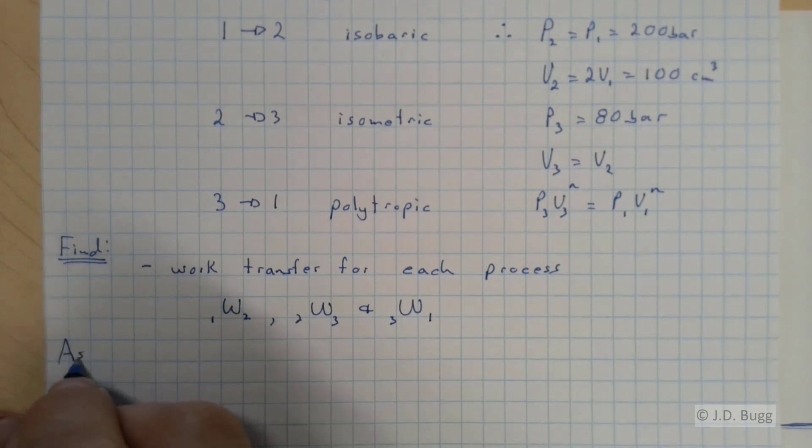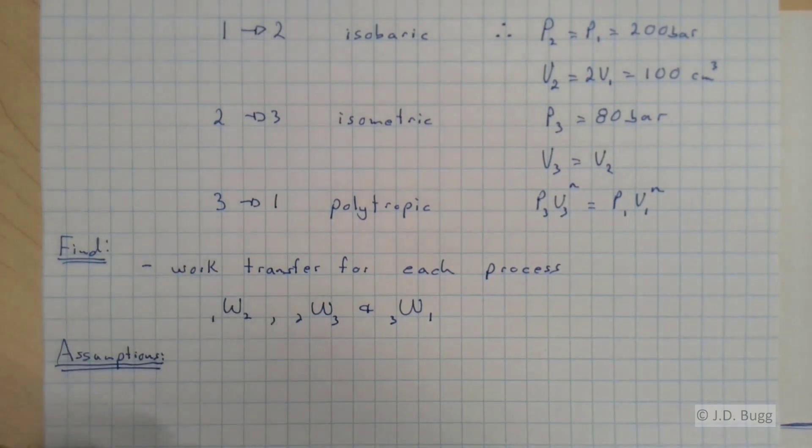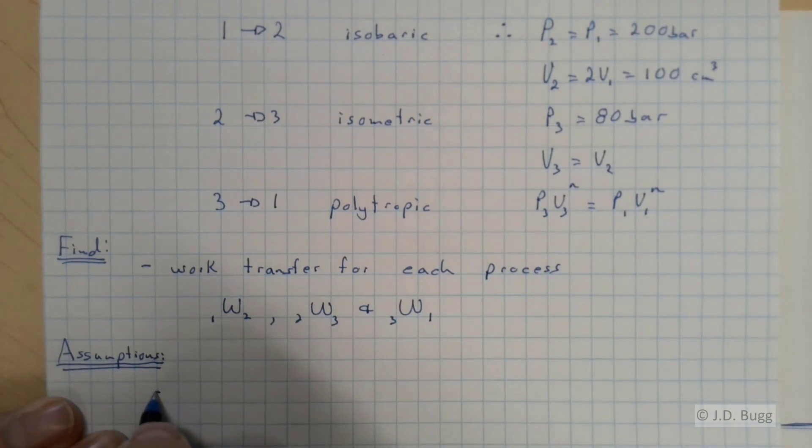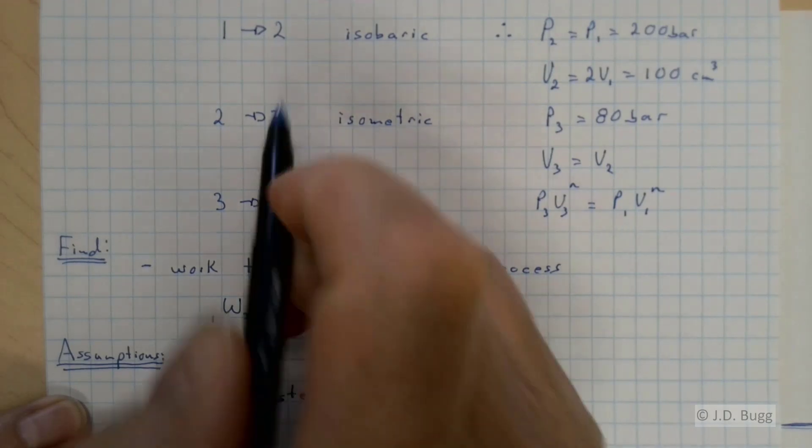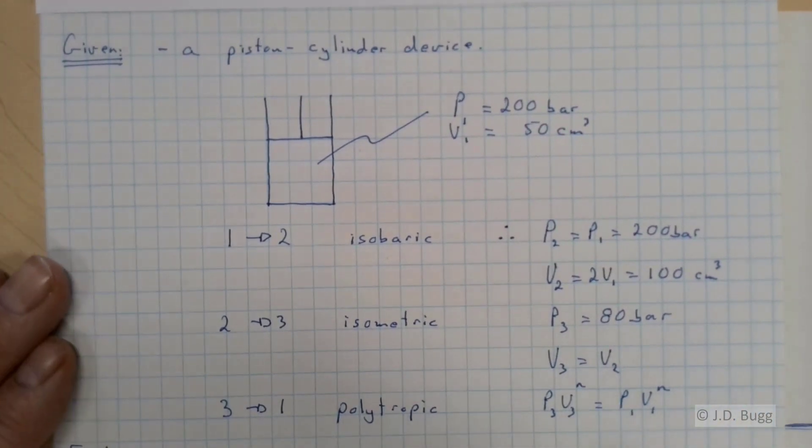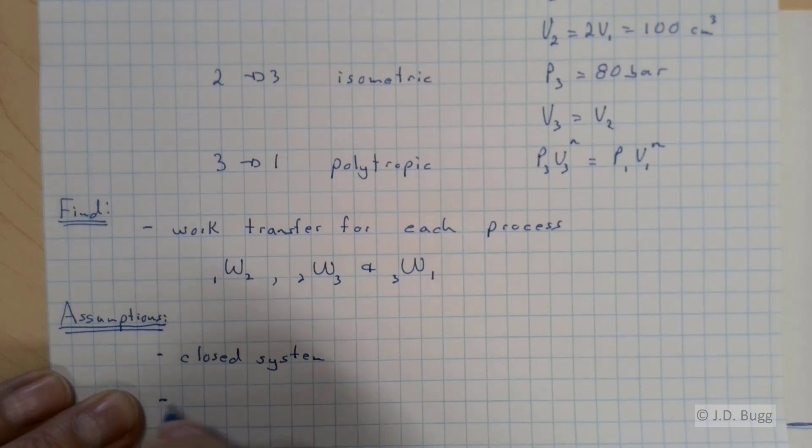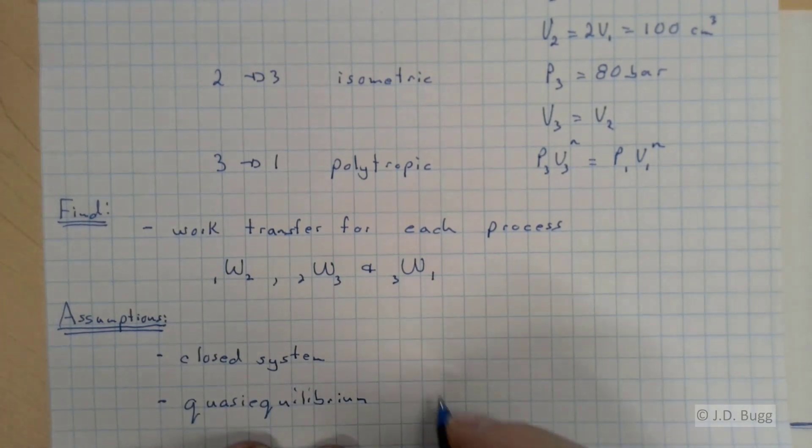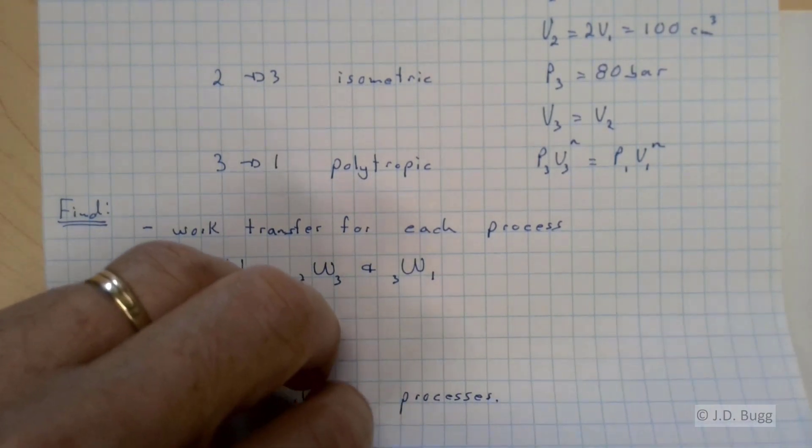So our assumptions. We're going to be calculating these work transfers from work equals the integral of PdV. So the two assumptions are: first, this is a closed system. So the amount of substance in this piston-cylinder device is the same throughout this entire cycle. And also it's quasi-equilibrium processes.